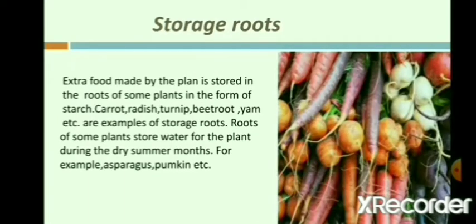Storage roots. This type of roots stores the extra nutrients that a plant makes. Carrot, radish, beetroot, yam, and sweet potato are some examples of storage roots. During shortage of food due to flood or crop failure, people eat them as food. Roots of some plants store water for the plant during the dry summer months. For example, pumpkin.